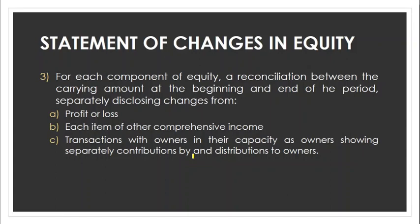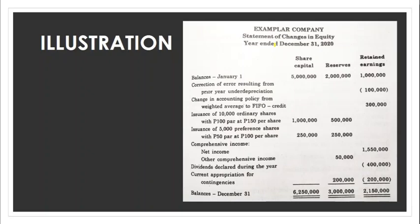Looking at an example of the statement of changes in equity: the heading includes the company name, the type of financial statement, and the period — which follows 'year ended,' the same as the income statement. The statement has beginning balances divided into share capital, reserves, and retained earnings. It then shows correction of prior period errors and changes in accounting policy, both recorded under retained earnings.